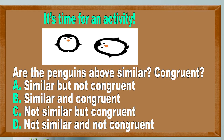It's time for some activities. Our first activity is observation. I would like you to look at the two birds on the screen and identify if those penguins are similar and congruent. So you're looking for similarity and congruency. We'll be back to discuss.